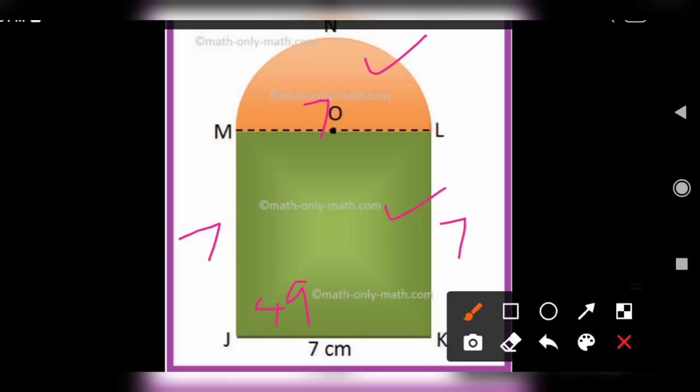Area of semicircle is 1 by 2 into πR². π means 22 by 7, into R². R is 3.5, so 3.5 into 3.5. We are cancelling. This is 0.5. Here using 2 table, this is 11. Here 0.5 into 3.5.